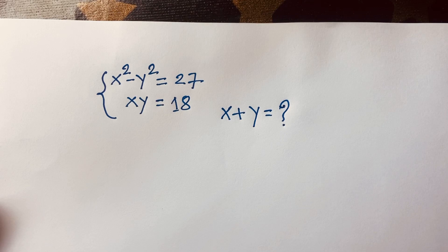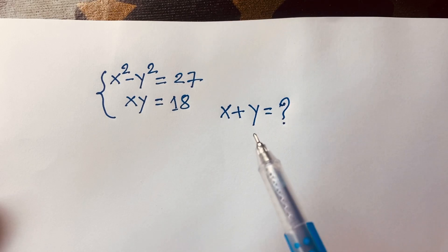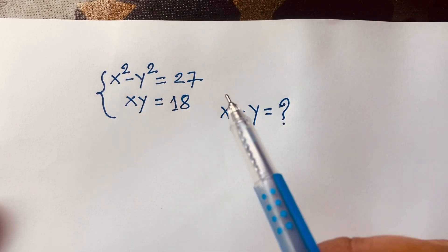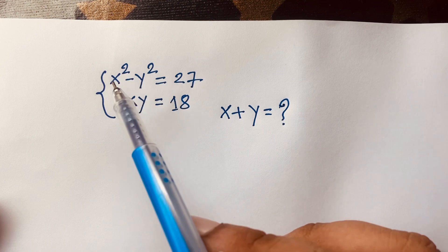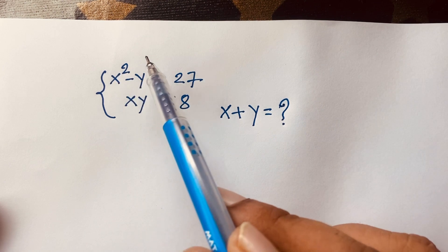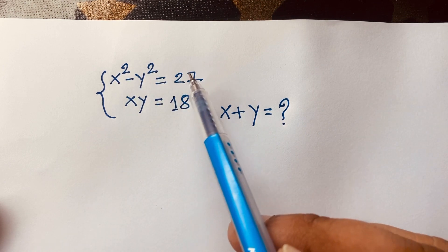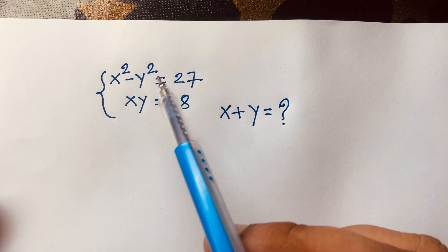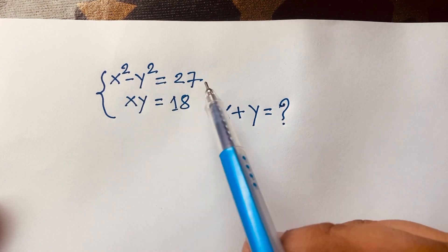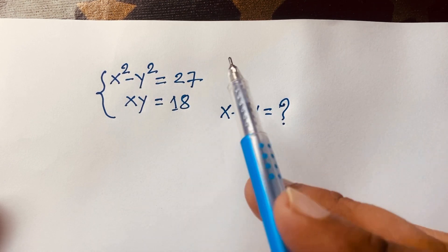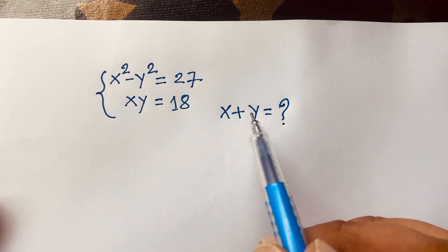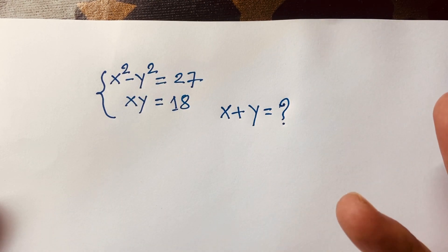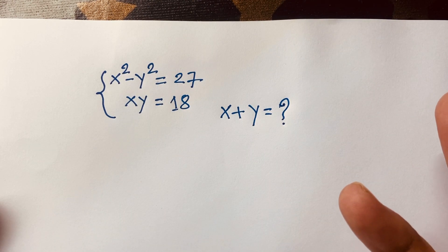Hello everyone. In this video we solve this interesting math question: x squared minus y squared is equal to 27, and xy is equal to 18. We will find out what x plus y is equal to.